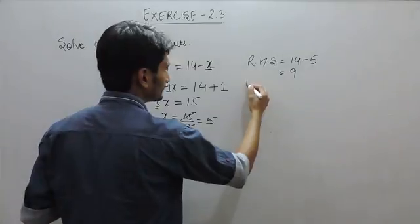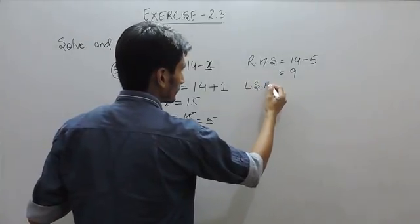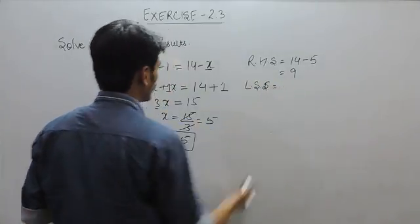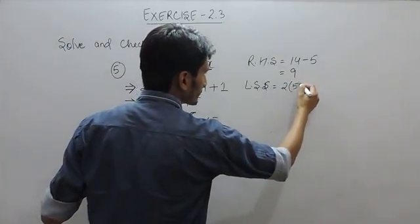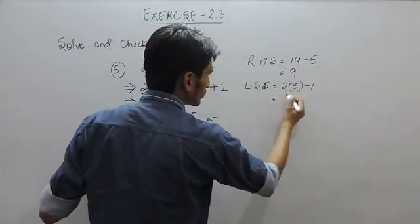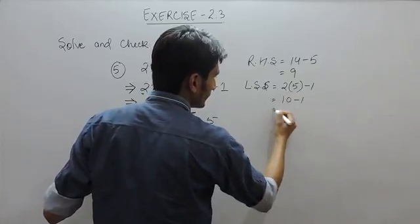And on the left hand side value which is 2x, and we know that x value is 5, minus 1. So this is 10 minus 1 is 9.